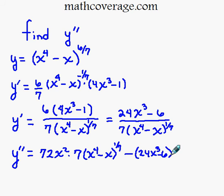Then rewrite what's in parentheses. 1/7 minus 1 is negative 6/7. Then take the derivative of the inside and chain it out. That becomes 4x^3 minus 1.